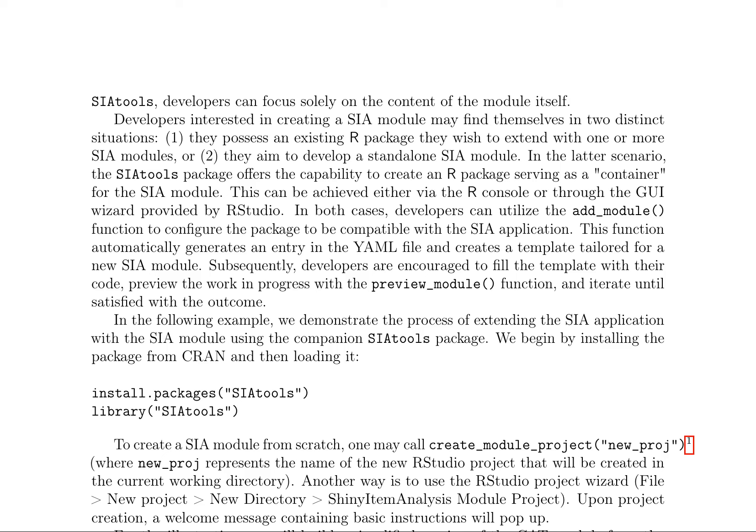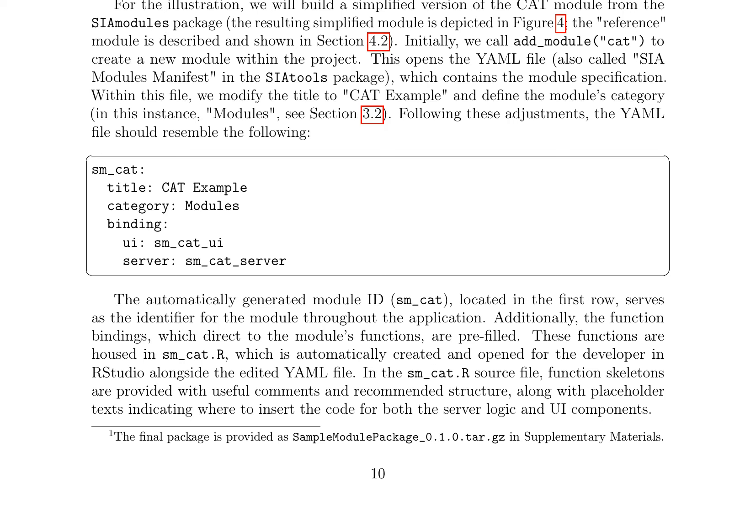To streamline the development of new SIA modules, the SIAtools package is introduced, comprising a collection of functions for constructing and managing modules, along with ready-to-use templates, guides, and various tests to ensure smooth integration of the module into the SIA application. Developers can focus solely on the content of the module itself. The SIAtools package offers the capability to create an R package serving as a container for the SIA module. Developers can utilize the add_module function to configure the package to be compatible with the SIA application, which automatically generates an entry in the YAML file and creates a template tailored for a new SIA module. The YAML file contains the module specification, including the title, category, and function bindings. The automatically generated module ID serves as the identifier for the module throughout the application.